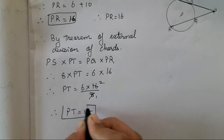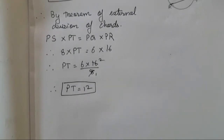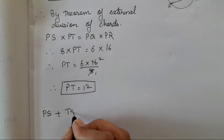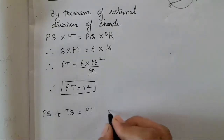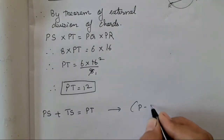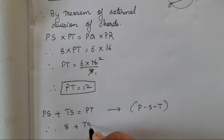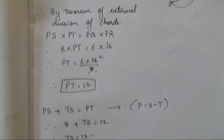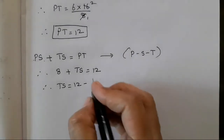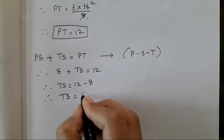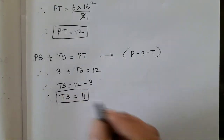Now we need to find TS. Since S is between P and T, PS + TS = PT. Substituting: 8 + TS = 12. Therefore TS = 12 − 8 = 4. That is the answer.